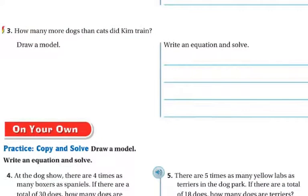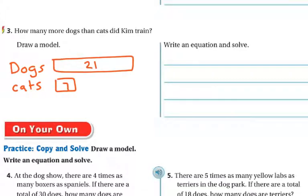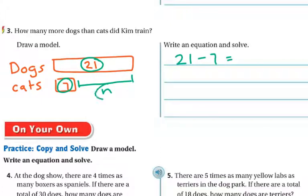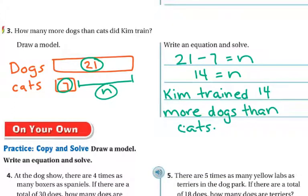The next question asks: how many more dogs than cats did Kim train? We know dogs were 21 and cats were seven. We don't know the difference — the space in between. So we write: 21 minus seven equals N. And 21 minus seven is 14. So N equals 14. Kim trained 14 more dogs than cats.